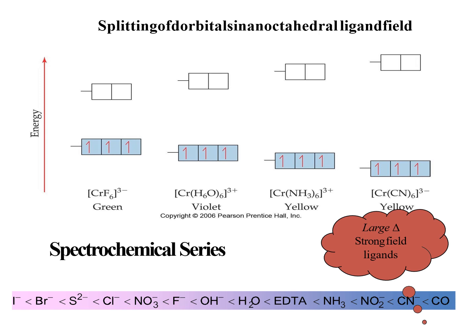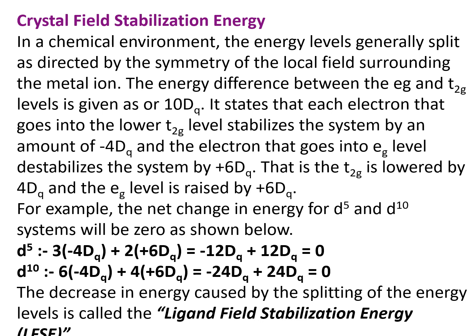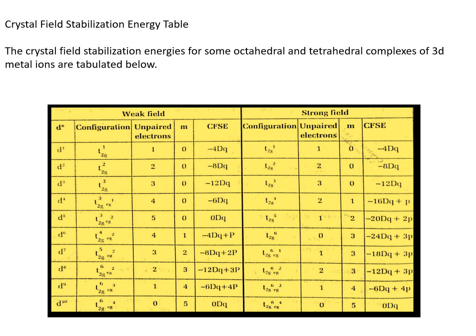Splitting of d orbitals in the octahedral field: strong field ligands have a larger delta value. The crystal field stabilization energy (CFSE): the energy difference between the Eg and T2g levels is given as 10Dq. Each electron that goes into the lower T2g level stabilizes the system by an amount of -4Dq, and each electron that goes into the Eg level destabilizes the system by +6Dq. The T2g is lowered by 4Dq and the Eg level is raised by +6Dq. For d⁵ and d¹⁰ systems, the net energy change will be zero. The decrease in energy caused by the splitting of the energy level is called the ligand field stabilization energy. This is the crystal field stabilization energy table for weak field and strong field ligands.